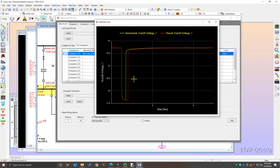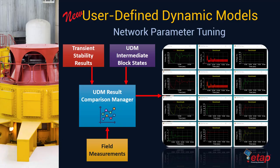Here we are comparing the output of transient stability along with measurements made at the terminal of the machine, so this tool can be used quite effectively in response evaluation, plot comparison, and obviously for network parameter tuning. You can perform unlimited plot overlays and comparisons, and produce results along with the benchmark file for grid code compliance for operational systems. In summary, network parameter tuning can be done through taking UDM intermediate block states, transient stability results, and field measurements compared together, and this information can be used to not only tune your network model but also produce a deliverable for operational grid code compliance.